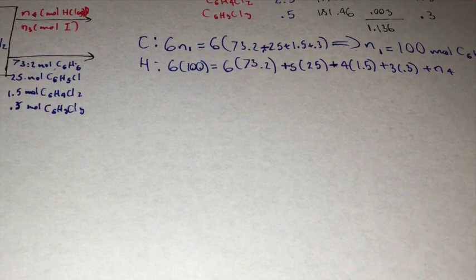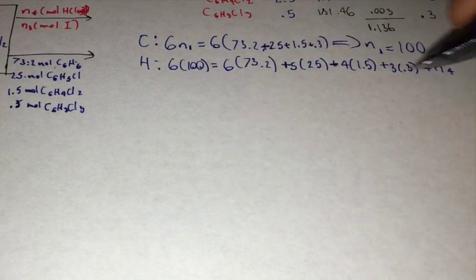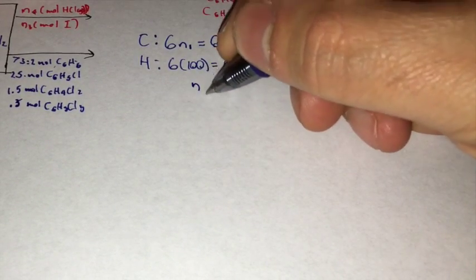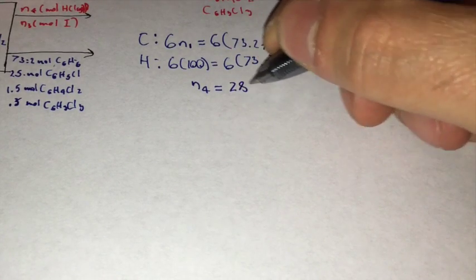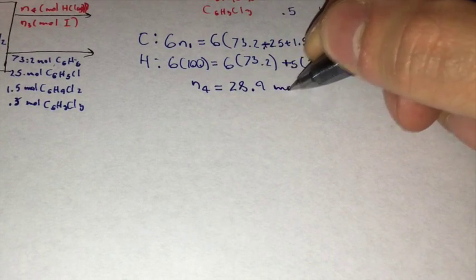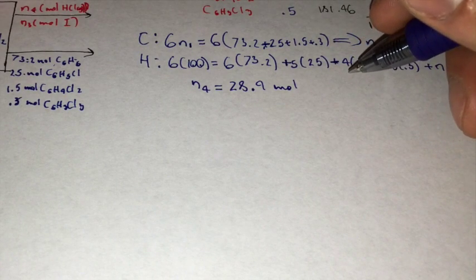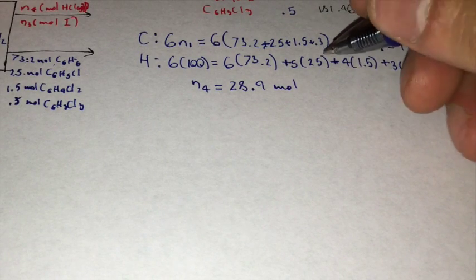So now we can solve for N4 in this equation, and our N4 is going to be equal to 28.9 moles. There you go, of HCl.